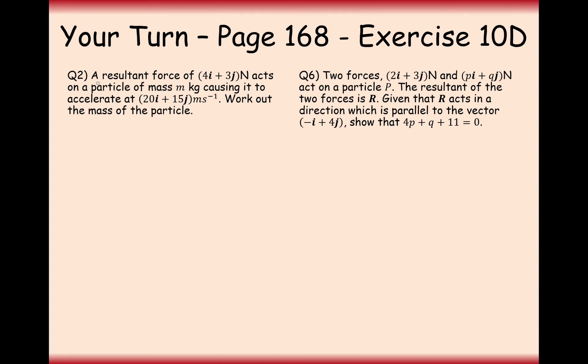Well done for having a go at these two questions then. Let's have a look at the first one, a resultant force 4i plus 3j acts on a particle of mass m kilograms, causing it to accelerate at 20i plus 15j. Work out the mass of the particle. So in this case here, we've got two parts of our F equals ma formula, just not the mass. So it's 4i plus 3j equals m times by 20i plus 15j. And we can see here, comparing both the i components and the j components, that we need to take a fifth of the acceleration to get it to equal the force. So m here is equal to 0.2 kilograms.